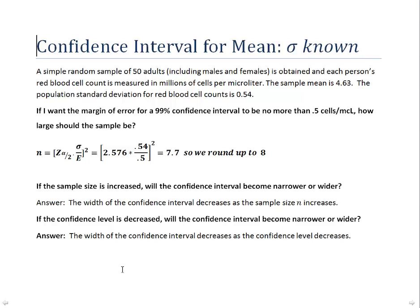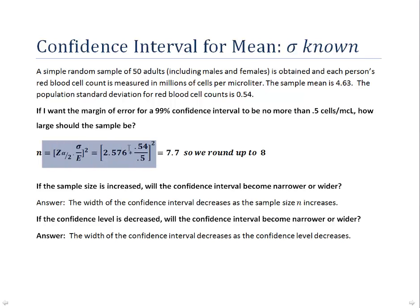The next question works in reverse. We assume we have a maximum margin of error we'd like — we want E to be no more than 0.5 cells per microliter — and we work backwards to calculate the required sample size, still at 99% confidence. Using the formula for n and plugging in all the values, we get 7.7. In this type of problem, we always round up, which means we need to randomly sample 8 adults to achieve a 99% confidence interval with a margin of error of no more than 0.5.